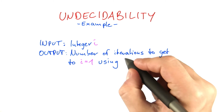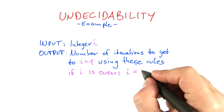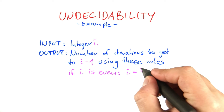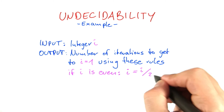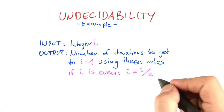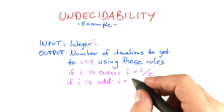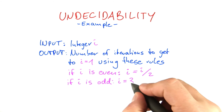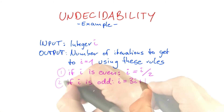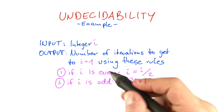If i is even, then set i to i divided by 2. If i is odd, set i to 3i plus 1. Just two simple rules.